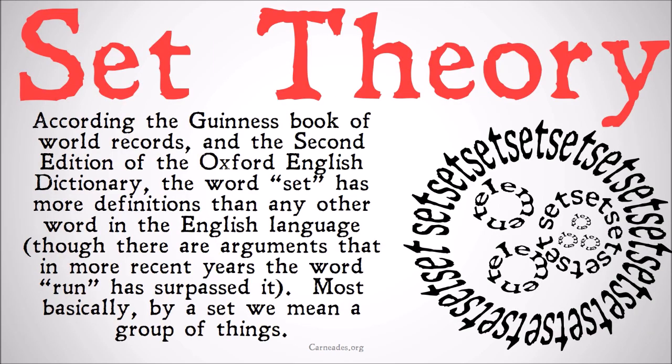According to the Guinness Book of World Records, the second edition of the Oxford English Dictionary, the word 'set' has more definitions than any other word in the English language, though in more recent years the word 'run' may have surpassed it. Most basically, by a set — when we're talking about logic and set theory — we mean a group of things. Think of a set as a group of things, like a set of silverware, a set of china, a set of chairs, or a set of kings in your hand if you're playing cards.